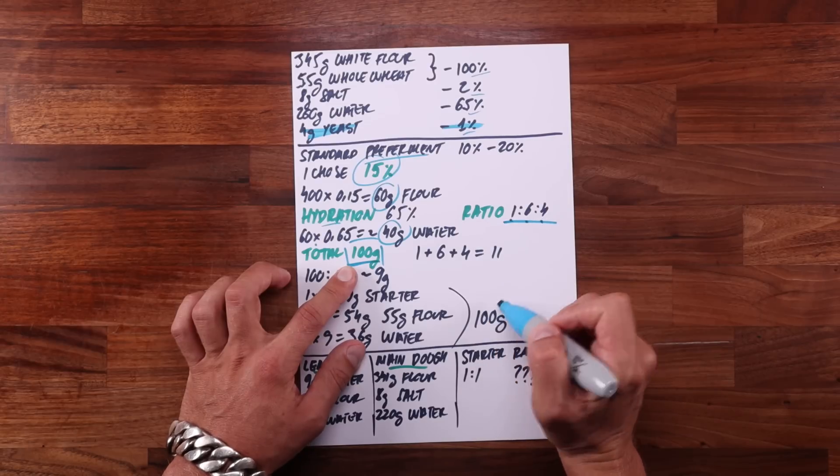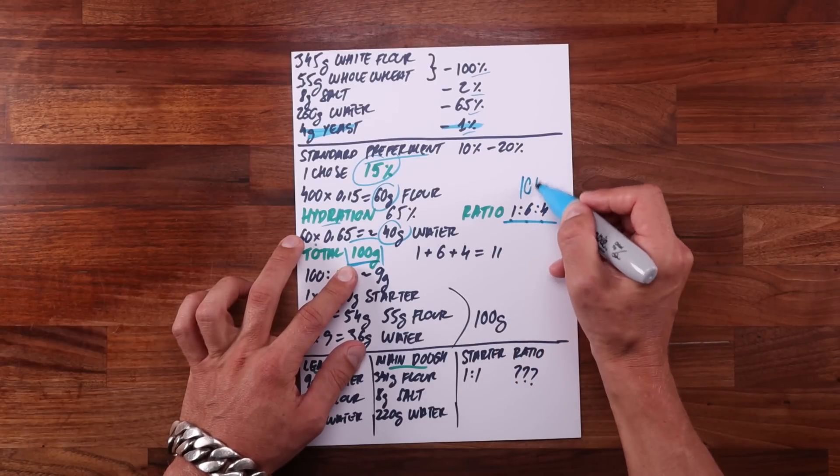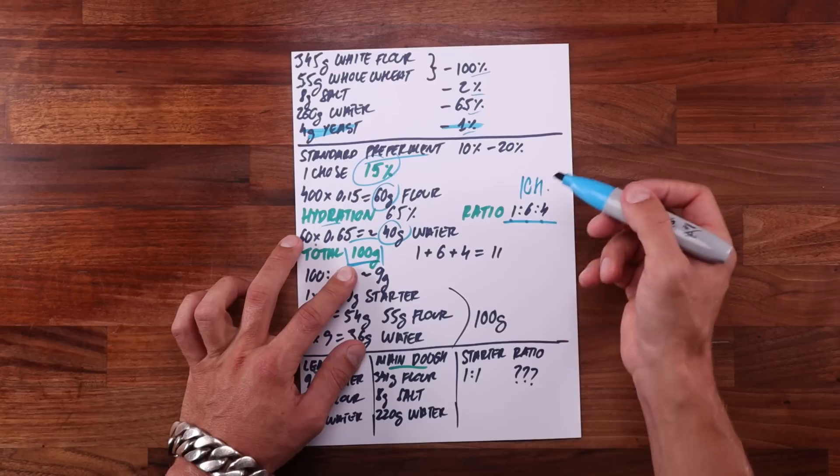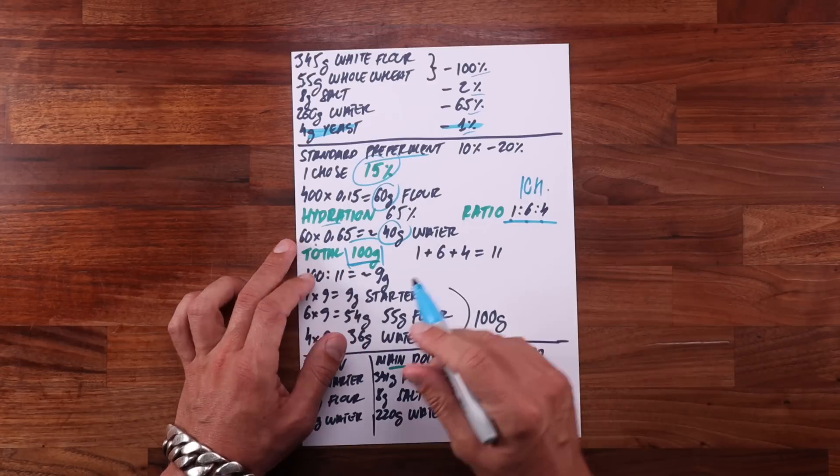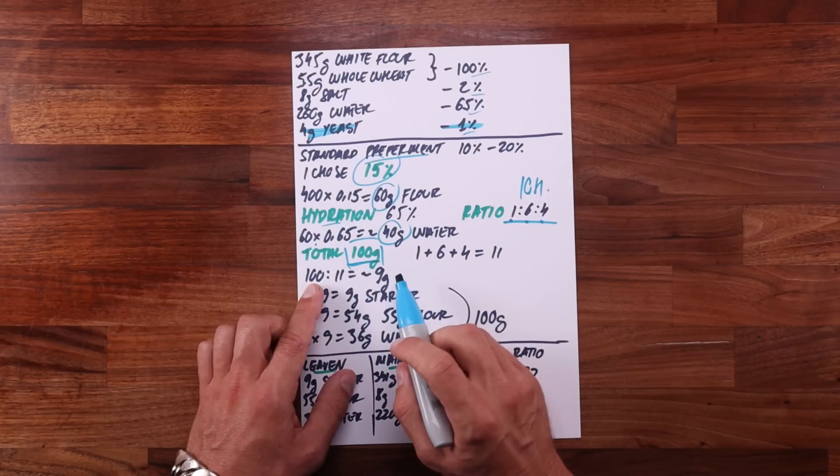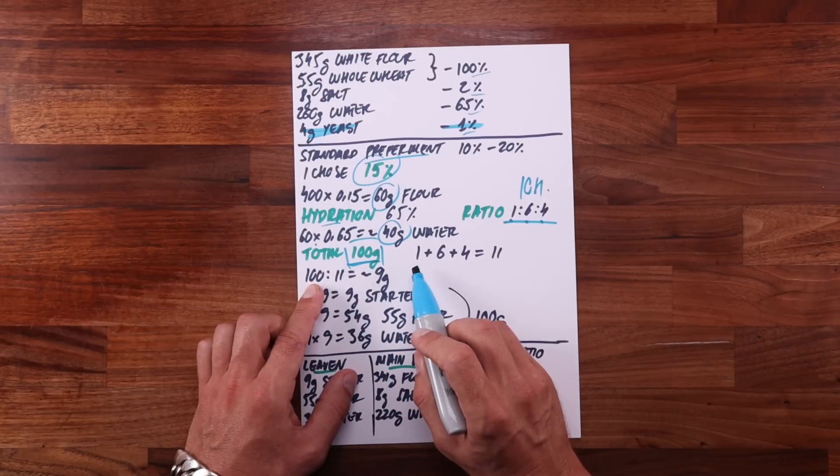And that's where you need to come up with the ratio. Now I know that leaven made from my starter at a 1 to 6 to 4 ratio will be ready in about 10 hours. These numbers could change to anything. It does not matter. The calculations are still the same.